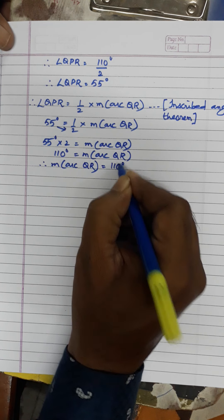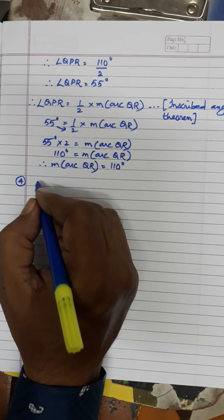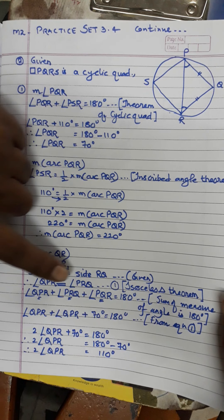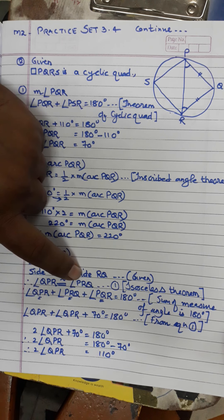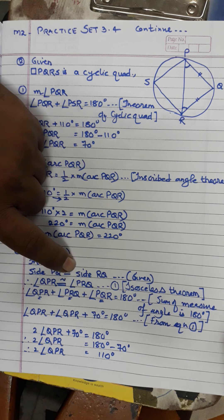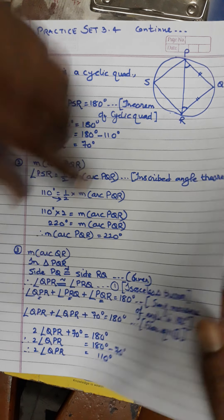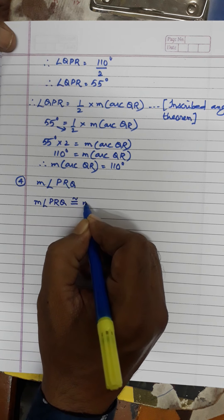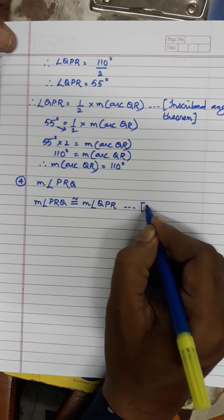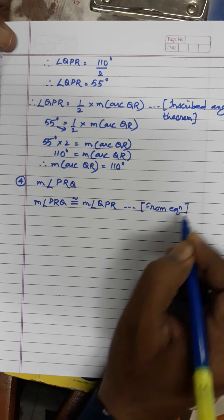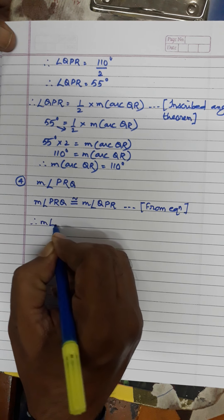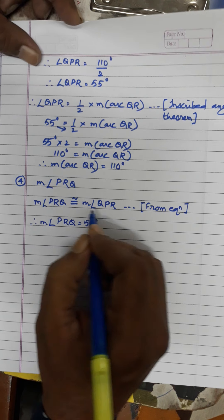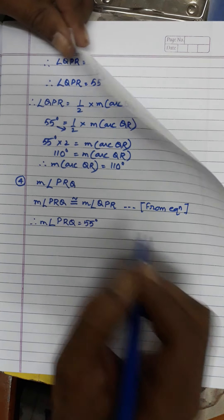So measure of arc QR is 110 degrees — that's the third bit. For the fourth bit: measure of angle PRQ. From equation 1, angle QPR is congruent to angle PRQ, and we already found angle QPR equals 55 degrees. Therefore measure of angle PRQ is also 55 degrees. That completes all 4 bits.